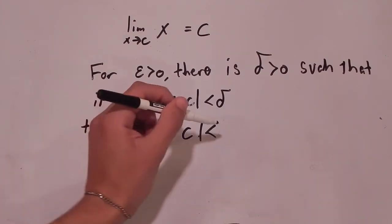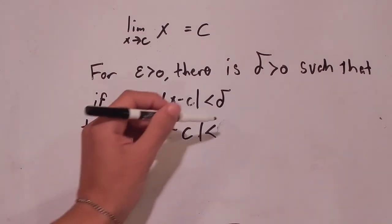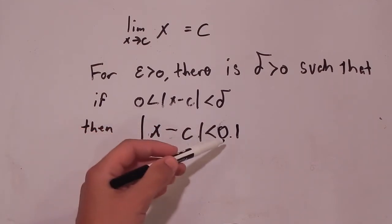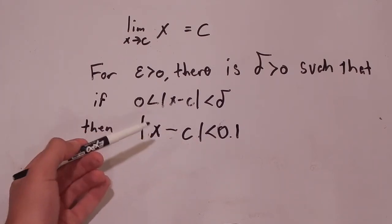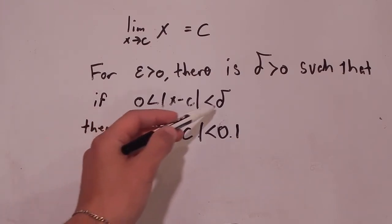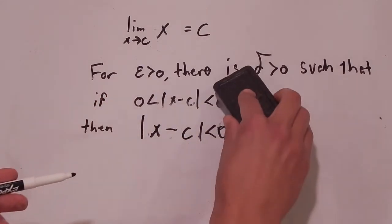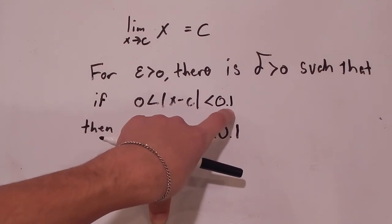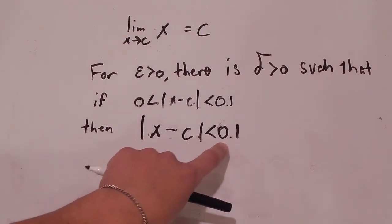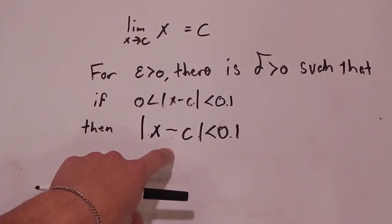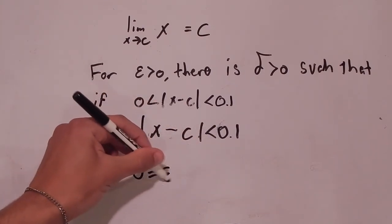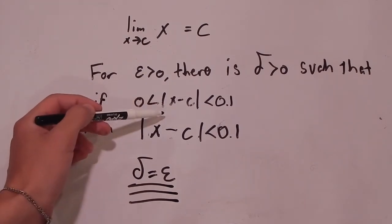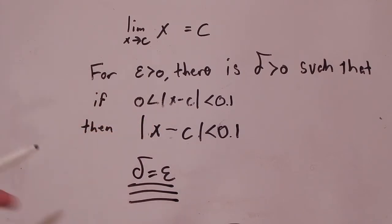Let's start from the beginning with a quick example. Let's say you give me an epsilon value of 0.1. I have to find a delta value such that the f of x value will fall within 0.1 units of L. Well, in order to find that delta value, we set delta equal to epsilon. So we would set delta equal to 0.1. This is saying that when x is within 0.1 units of c, then f of x is within 0.1 units of L, which is what we intended to prove. So by setting delta equal to epsilon — a very important step in this proof — we've shown that these two inequalities are the same, and because they are the same, we can say that one is true whenever the other is true.